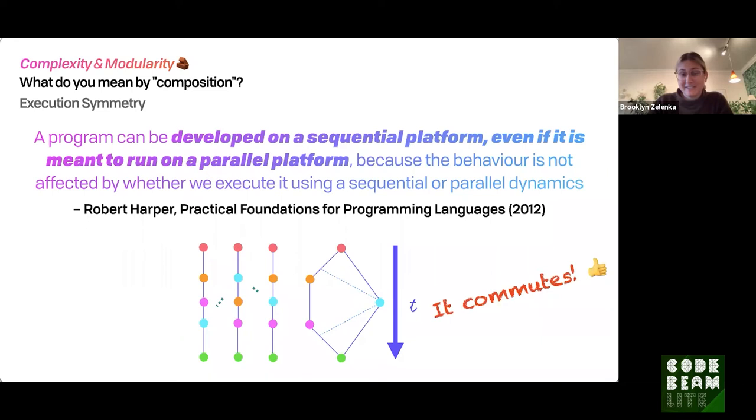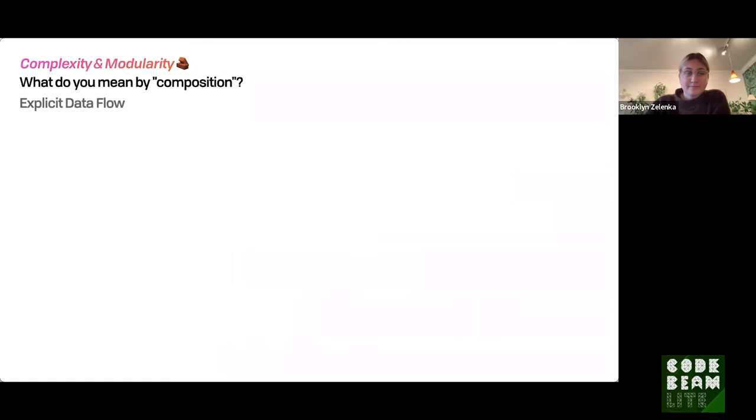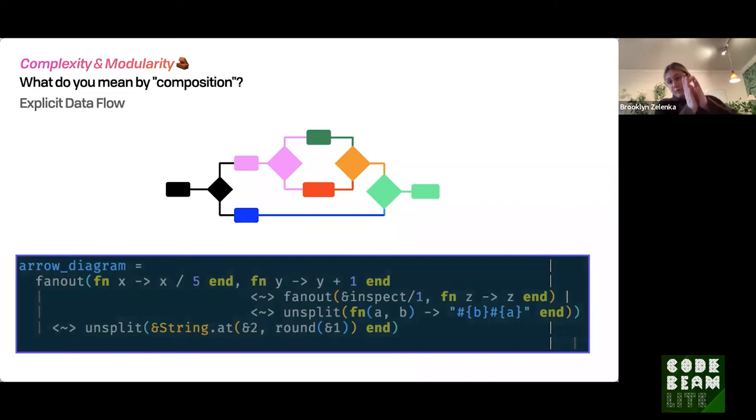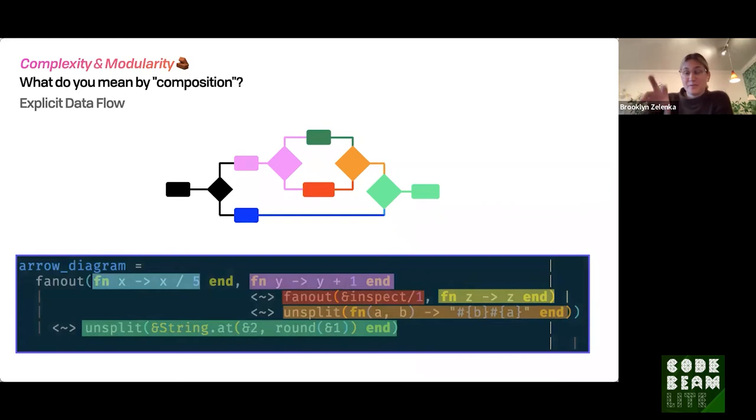And finally, execution symmetry. A program can be developed on a sequential platform even if it's meant to run on a parallel platform, as long as we're aware of the properties it has. If we have ideas like associativity or commutativity, then it doesn't matter the order we do things, so a sequential program is perfectly fine and a valid interpretation. This makes it much easier to test. As a picture, time moving downward, we fork the process, these two happen, then the blue one on the right. Blue is going to happen sometime in the middle, meaning we have different timelines, different executions that are actually equivalent.